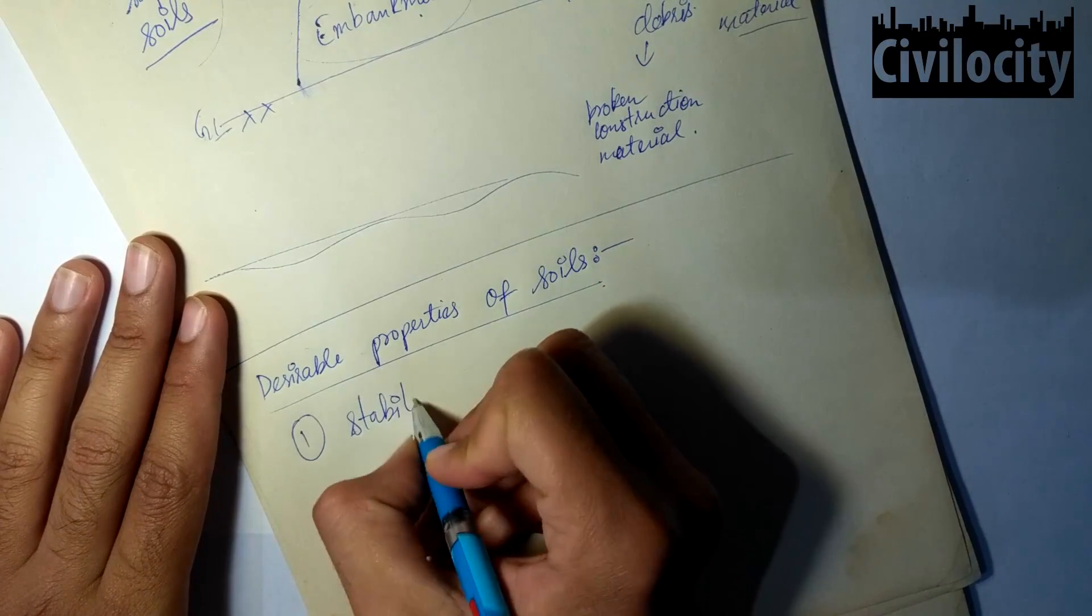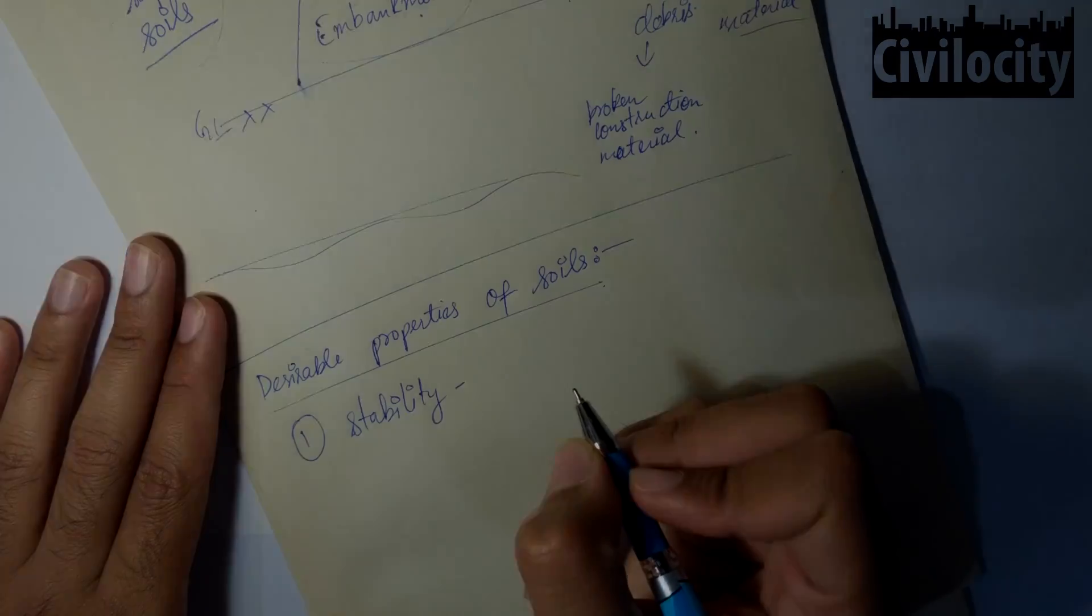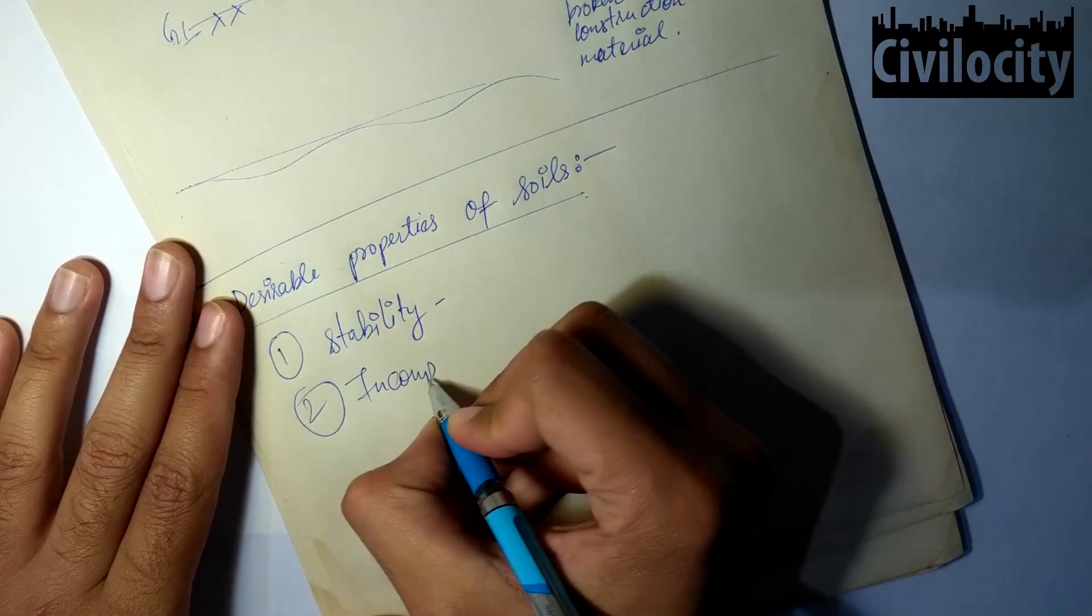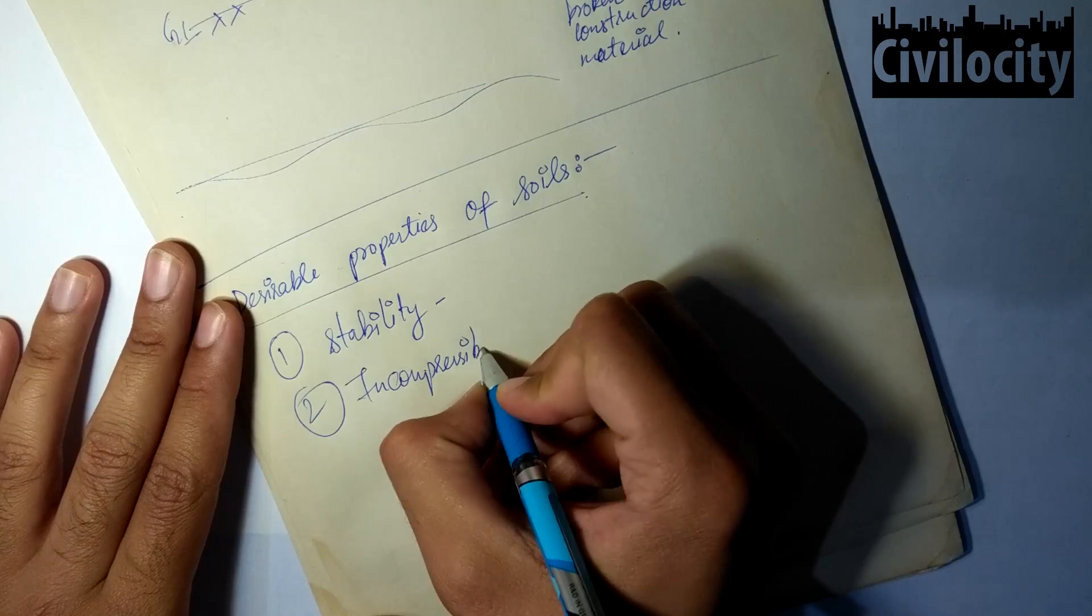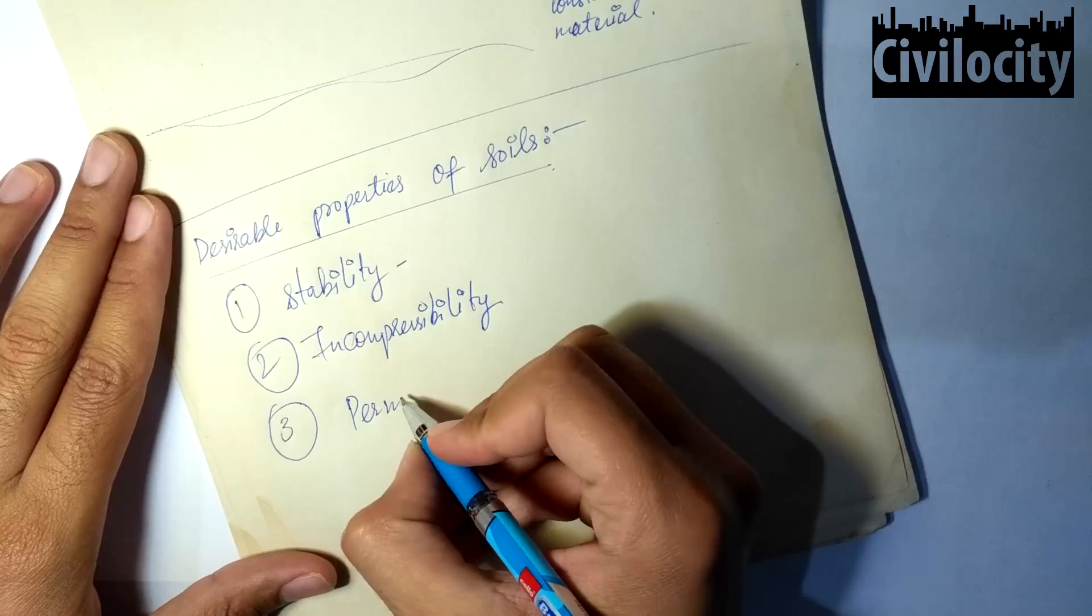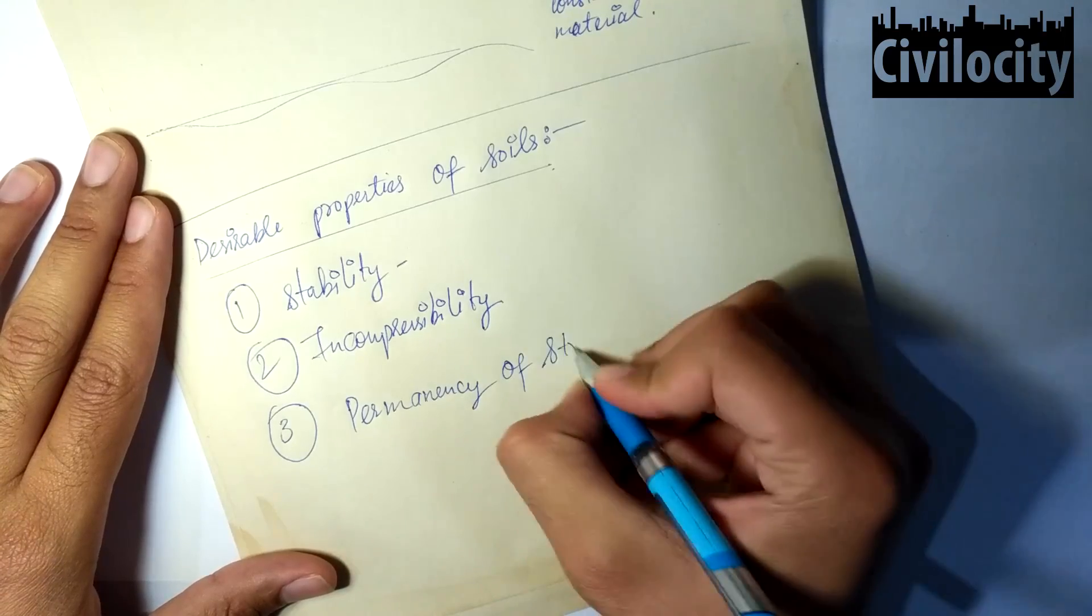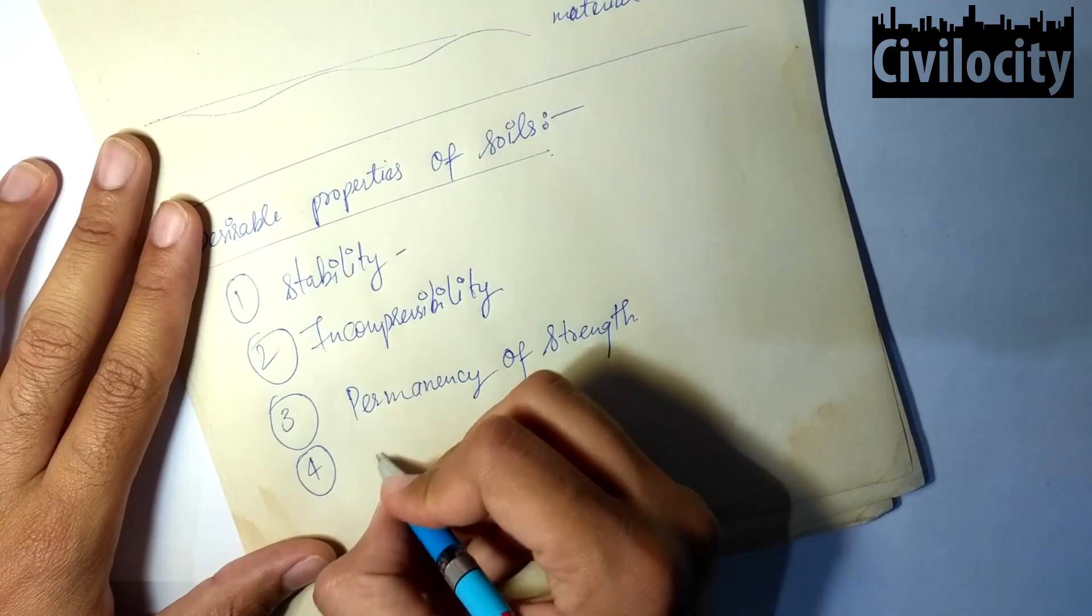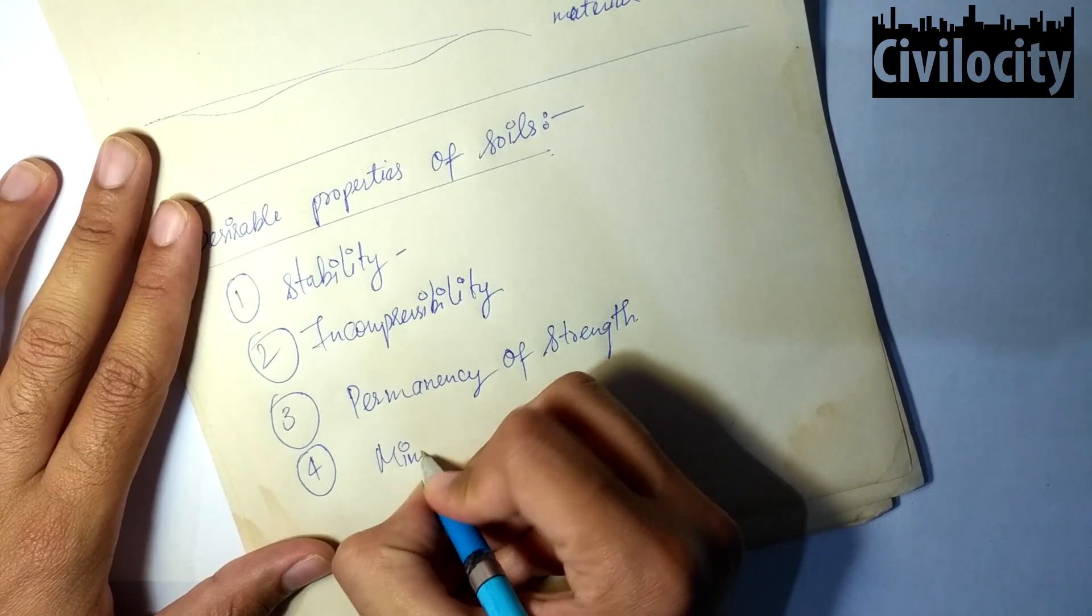Our soil should be stable. Second is incompressibility. Our soil should not be compressible under heavy loading. Our next point is permanency of strength. The strength should be permanent and uniform throughout its lifespan. Our fourth point is minimum changes can be accepted.